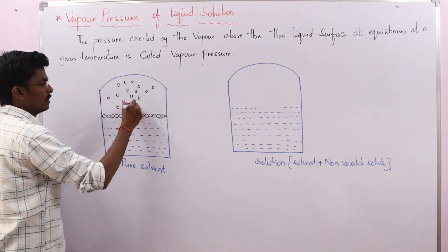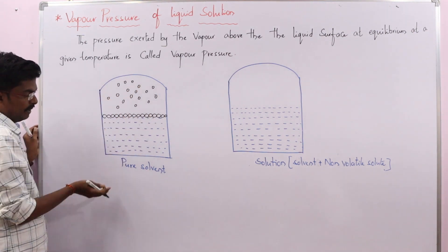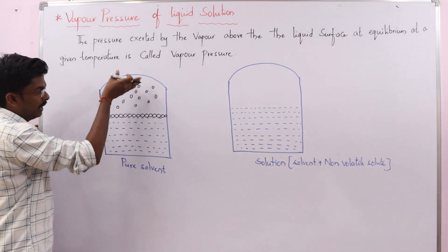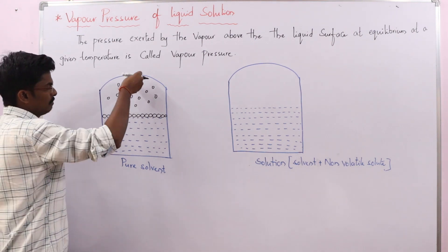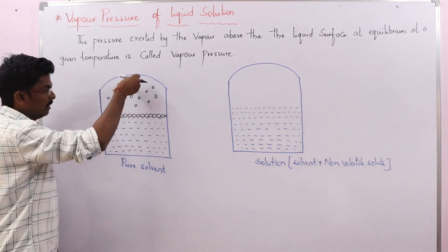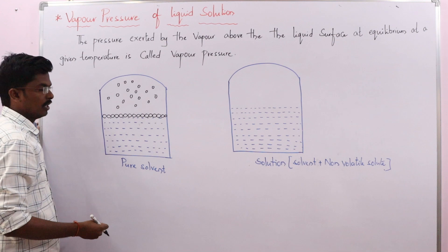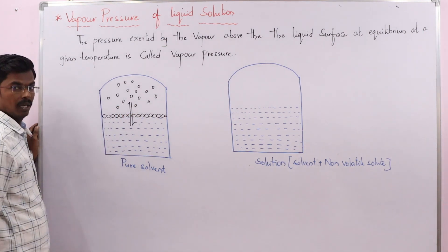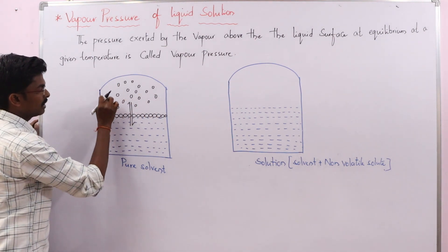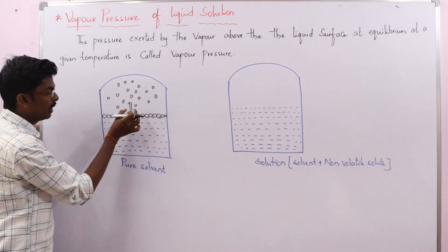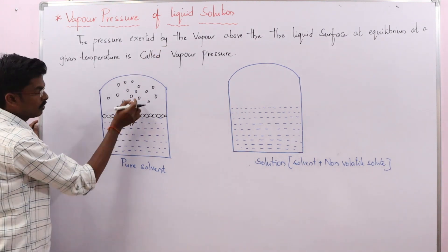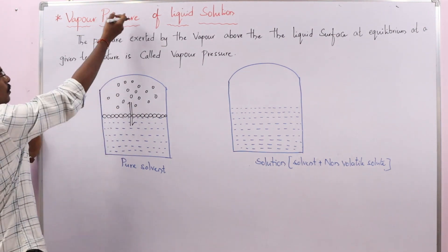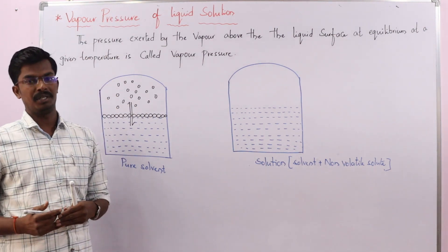Some of the solvent particles are escaping from the liquid and occupying the space in the jar. After some time, these vapours condense again and come back into the liquid. At that point, it attains an equilibrium. That is why the pressure exerted by the vapour above the liquid surface at equilibrium at a given temperature is called vapour pressure.